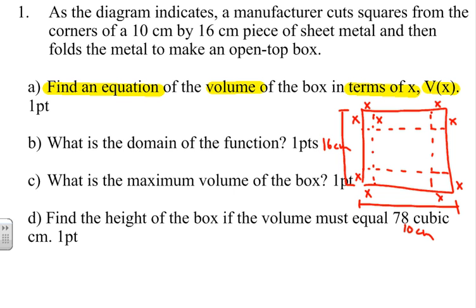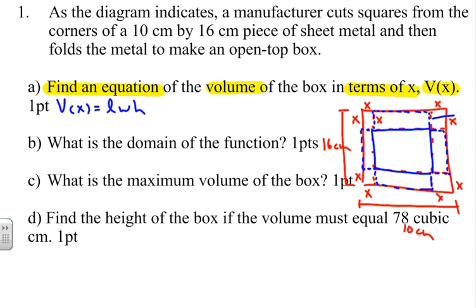To find the volume, recall that volume equals length times width times height. When we lay out the flat sheet, those little squares of size x that we're cutting from the corners are what fold up to become the sides. So the height of the box is simply x — our H value equals x.